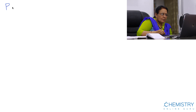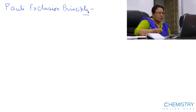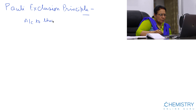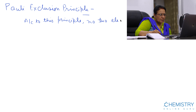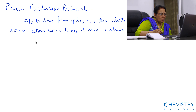Welcome to chemistryonline.guru. Today we will discuss Pauli's Exclusion Principle. According to this principle, no two electrons within the same atom can have the same values for all four quantum numbers.